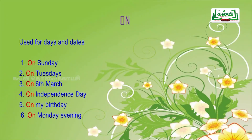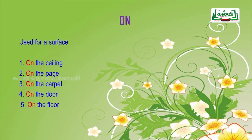Next comes the preposition on. On is used for days and dates — for example: on Sunday, on Tuesdays, on 6th March, on Independence Day, on my birthday, on Monday evening. On is also used for a surface — for example: on the ceiling, on the page, on the carpet, on the door, on the floor.